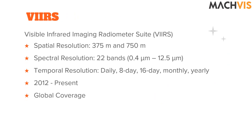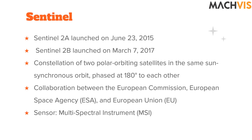VIIRS — Visible Infrared Imaging Radiometer Suite — has a resolution of 375 meters to 750 meters. It is mainly in the visible, infrared, and thermal region and has a revisit time of daily, weekly, bi-weekly, monthly, and yearly.